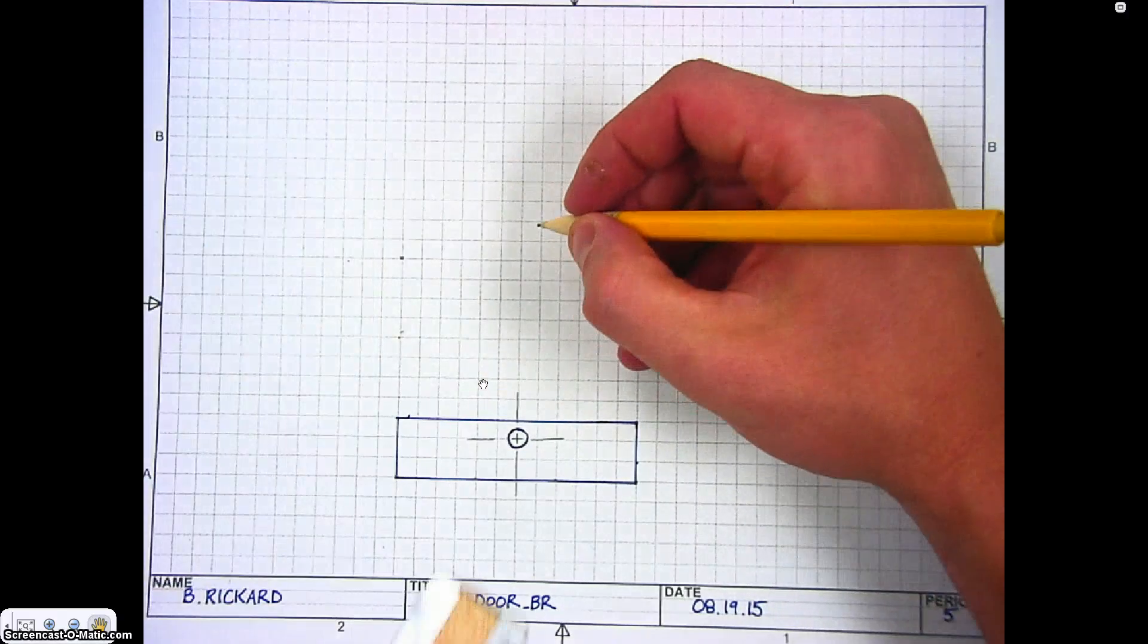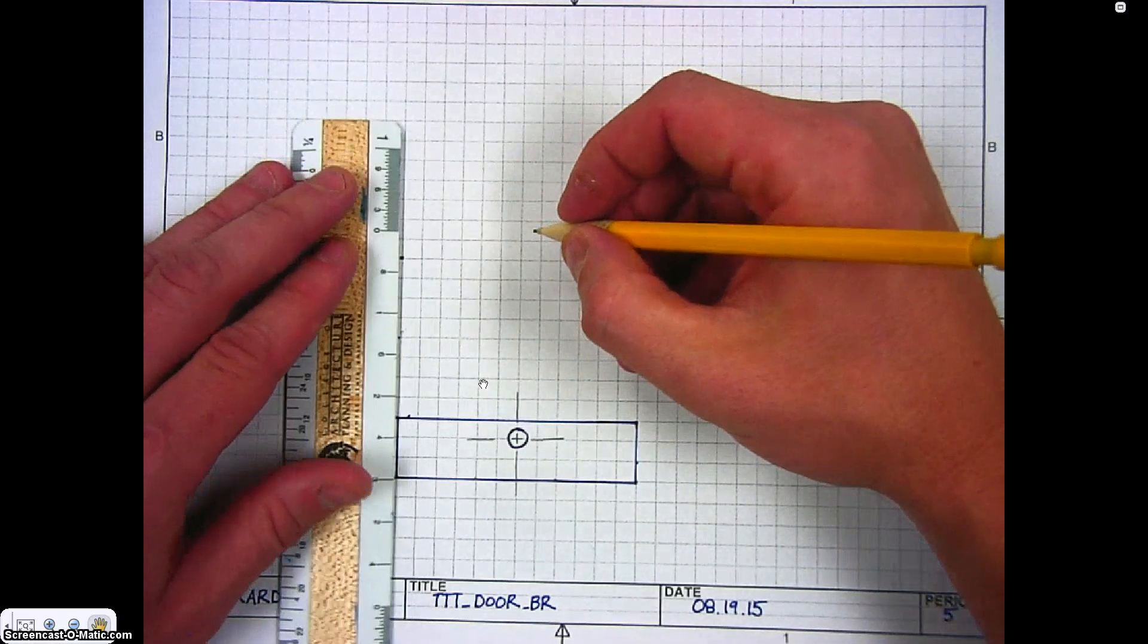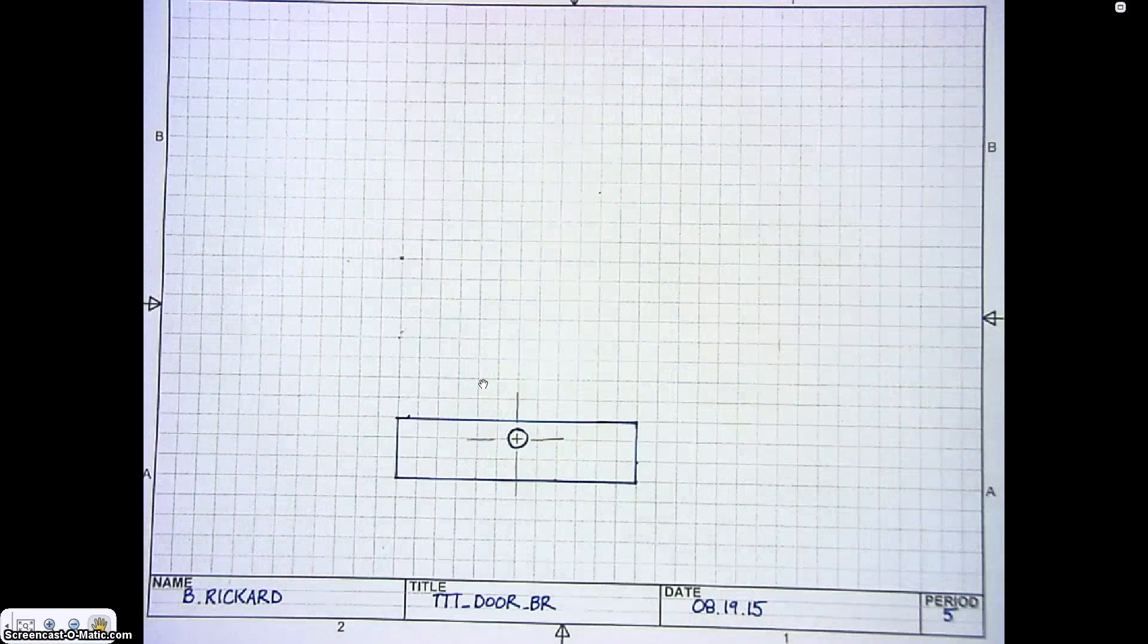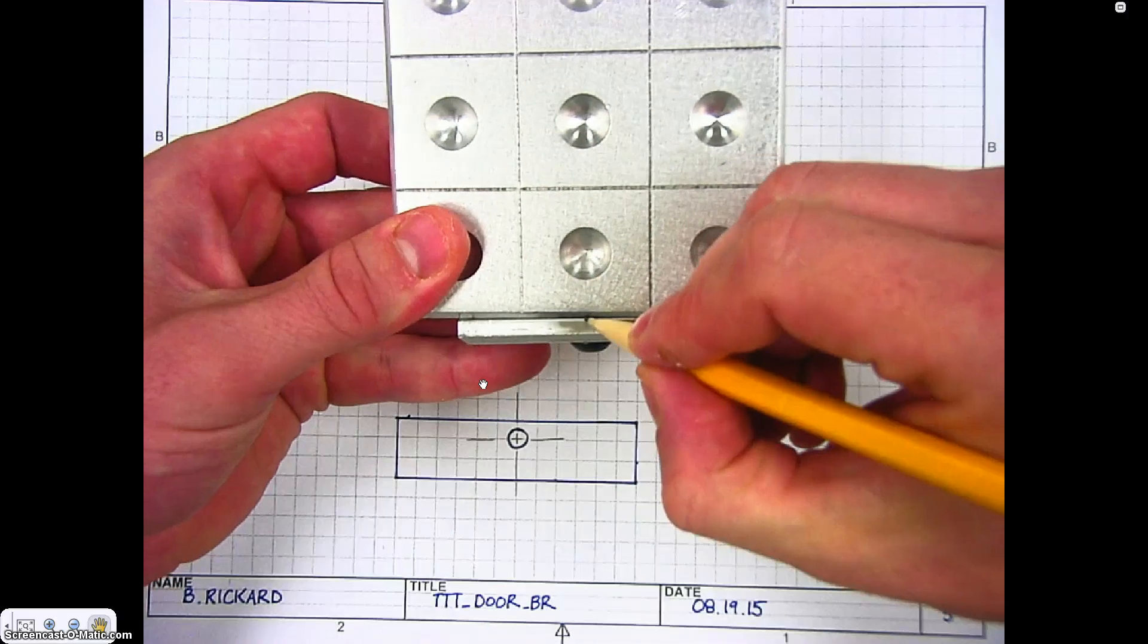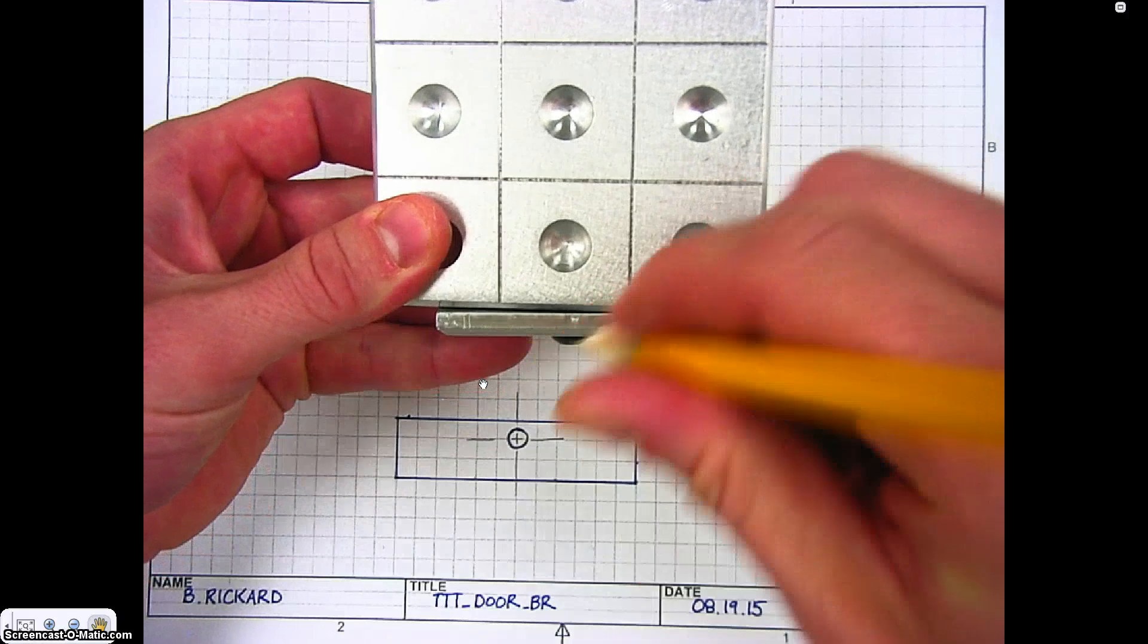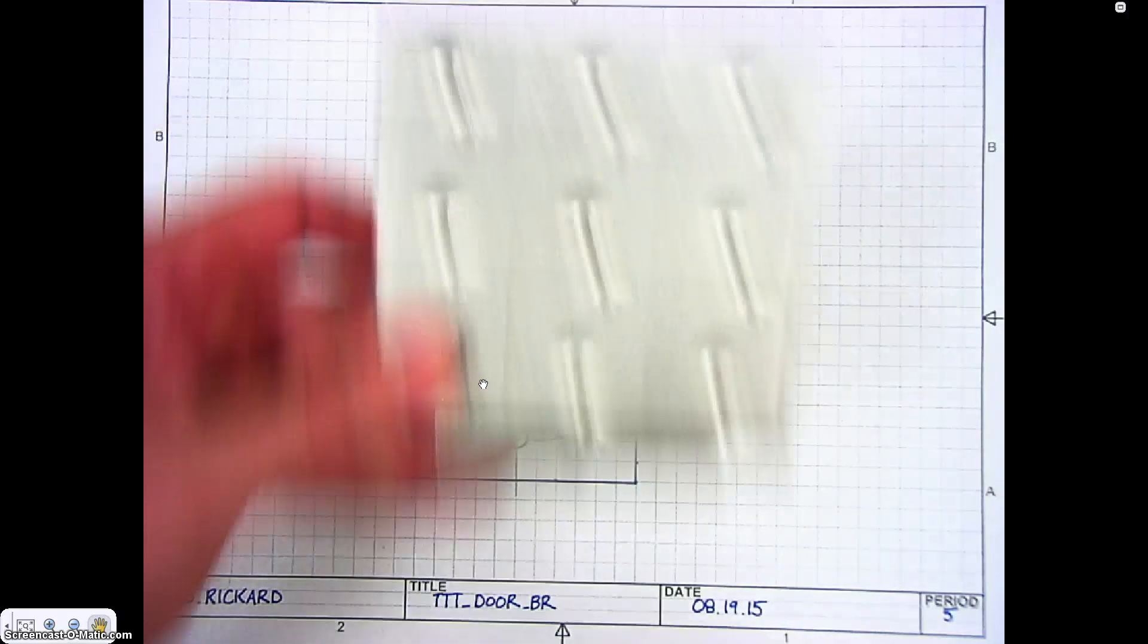This is where that other view is going to start. The top view is if we're looking at the object this way—I'm drawing this view as if I was looking straight down at that door.